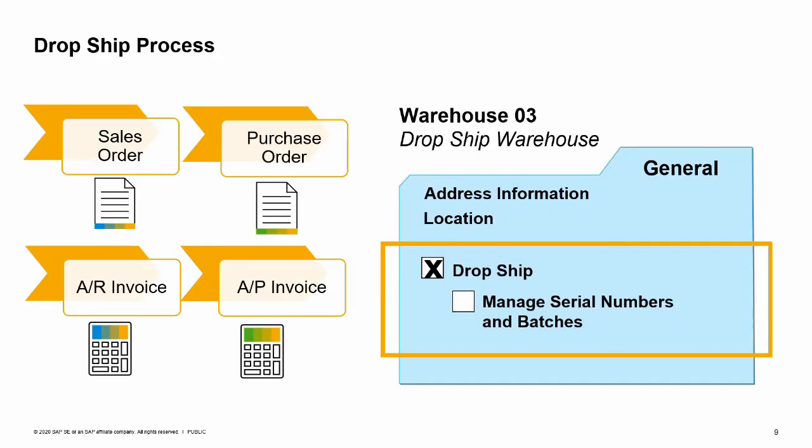Sometimes you have products you sell that you do not make or store. Instead, your company serves as a middleman between your customers and vendors. In those circumstances you can set up a drop ship warehouse. When a customer orders a product from a drop ship warehouse, the system opens the procurement confirmation wizard when you save the sales order. The wizard creates a purchase order for the preferred vendor of the item.